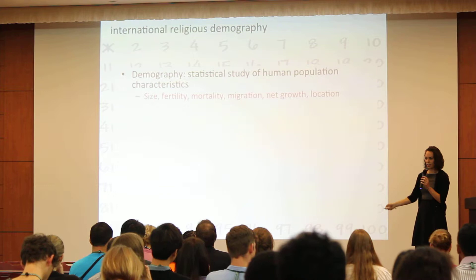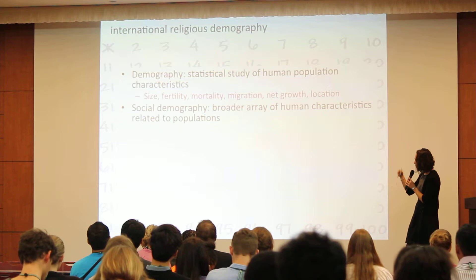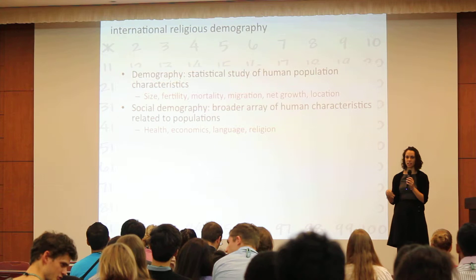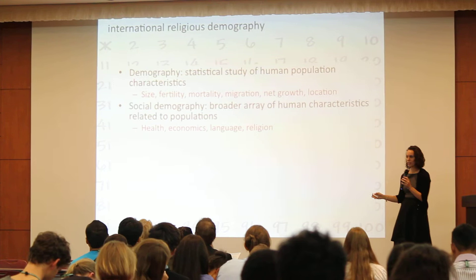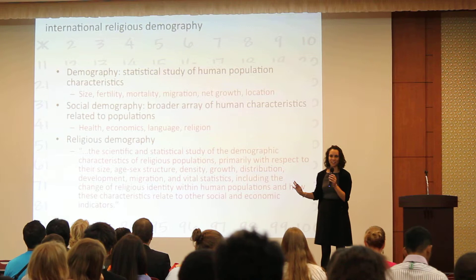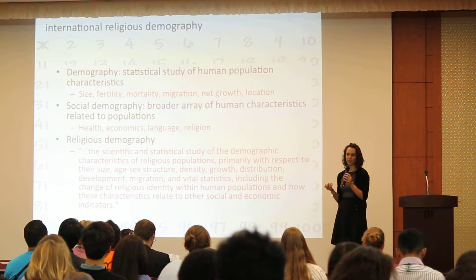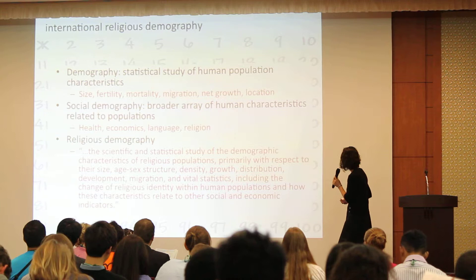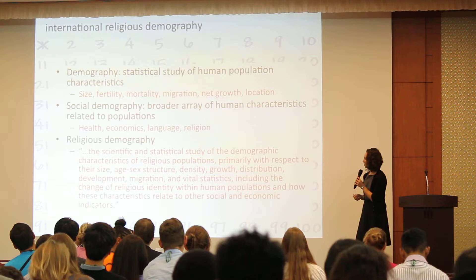One level underneath demography is social demography, which covers a broader array of human population characteristics such as health, economics, language, and religion — which is what I'm most interested in. Putting these together, you get religious demography. Religious demography is the scientific and statistical study of the demographic characteristics of religious populations.